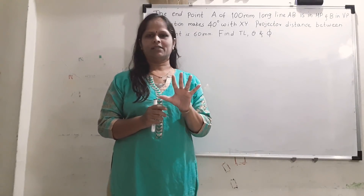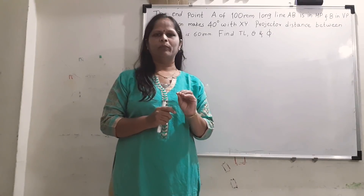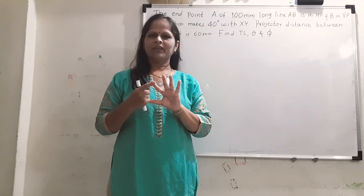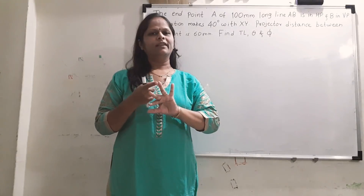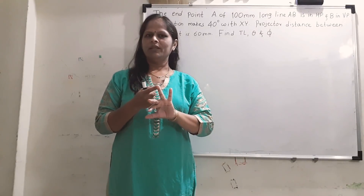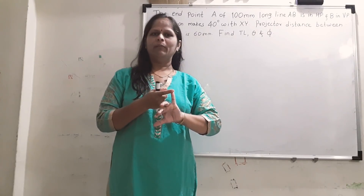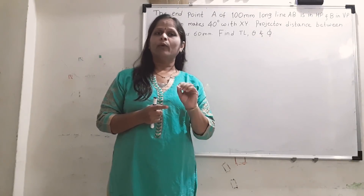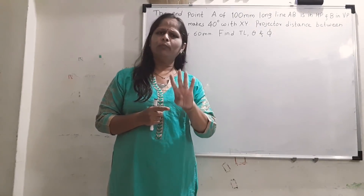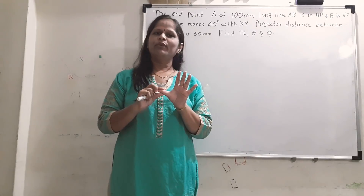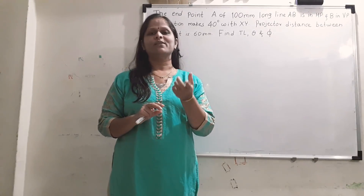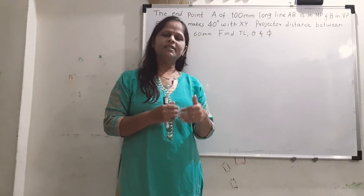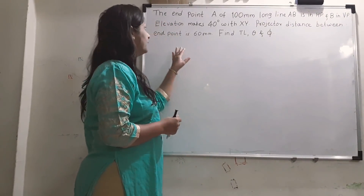To solve the problem effectively we should have five data points. For a normal line problem: the true length of the line is one point, distance from HP is second, distance from VP is third, theta - inclination of the true length with HP is fourth, and inclination of the line with the vertical plane is fifth. If four points are given, we assume one; if three are given, we assume two. This category is known as assumption problems.